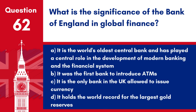Question 62: What is the significance of the Bank of England in global finance? a. It is the world's oldest central bank and has played a central role in the development of modern banking and the financial system. b. It was the first bank to introduce ATMs. c. It is the only bank in the UK allowed to issue currency. d. It holds the world record for the largest gold reserves. Answer: a. The Bank of England, established in 1694, has been a model for central banks around the world.